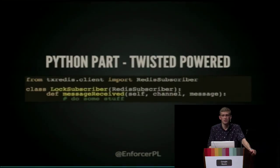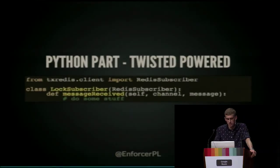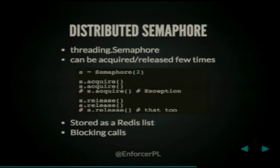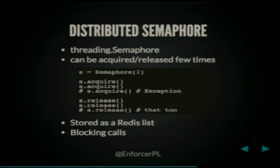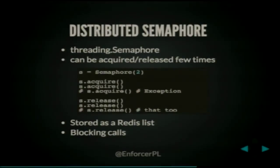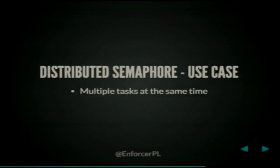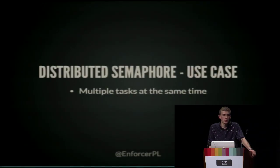The second part is about distributed semaphores. A semaphore differs from a lock in that it maintains an internal counter, so it can be acquired and released multiple times. If we define a semaphore with counter 2, we can acquire it twice and release it twice, but the original counter cannot be exceeded by further calls. This will be stored as a Redis list, and calls to it will be blocking. The use case is that a worker can handle multiple tasks at the same time.